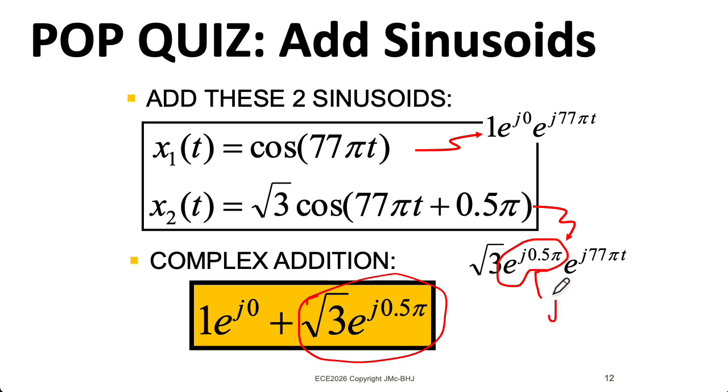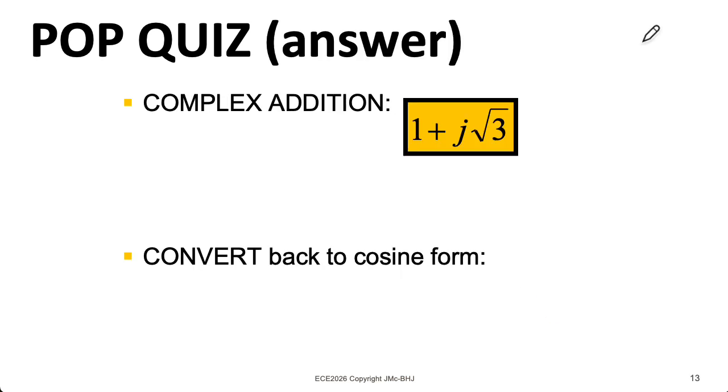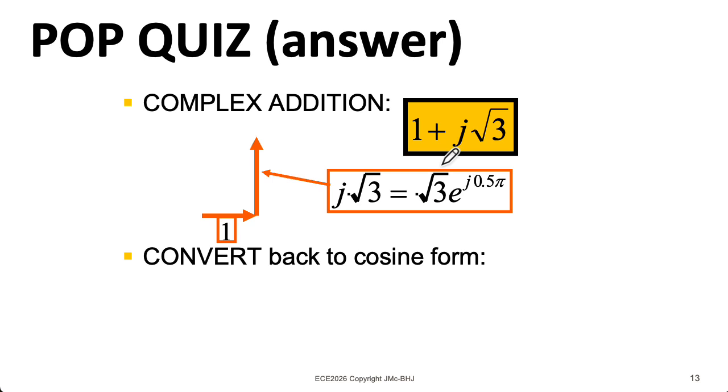So when I think about adding these things together, this is particularly nice because the phasor for x₁ is purely real and the phasor for x₂ is purely imaginary. When we realize that e^(jπ/2), well, that's just j. So thinking about converting this into polar coordinates, I have a real part of 1 and imaginary part, that's square root of 3.